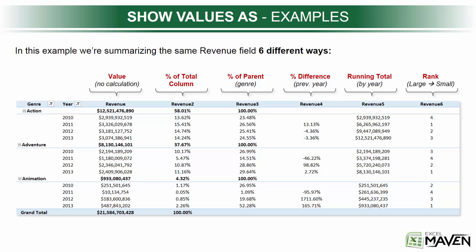You've also got other options like Percent Difference From, which is a perfect way to look at year-over-year percent changes without doing any manual calculations on your own. You can look at running totals each year, and you can add rank values, which will assign a ranking either large to small or small to large based on certain values. I'm going to dive into a bunch of these different calculations with actual hands-on demos, but for now just keep in mind that these Show Values As options are incredibly valuable tools for unlocking hidden insights within your data.